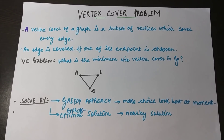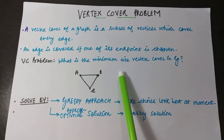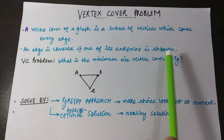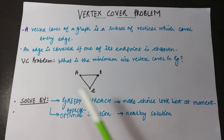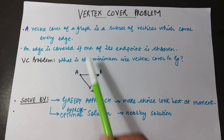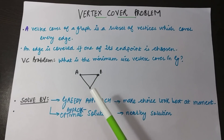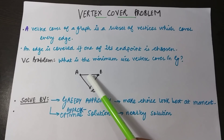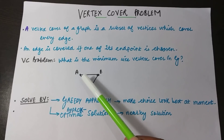Welcome everyone. Today's topic is the vertex cover problem. A vertex cover of a graph is a subset of vertices which covers every edge. I'm going to divide this definition into three parts: first, a vertex cover of a graph; second, a set of vertices; and third, every edge. This problem is associated with the graph — the edges here are AB, BC, and AC, and the vertices are A, B, and C.